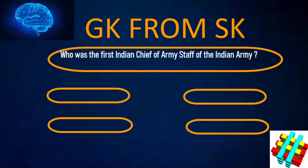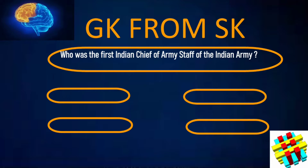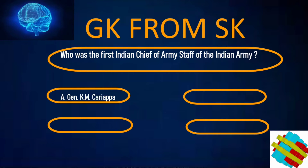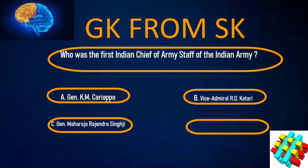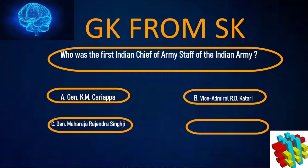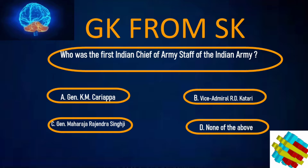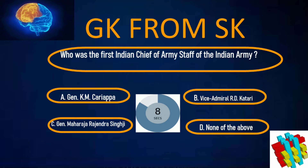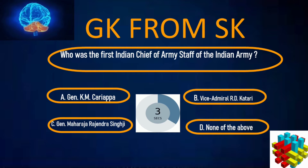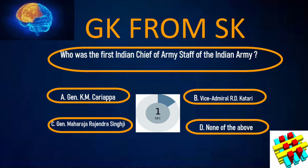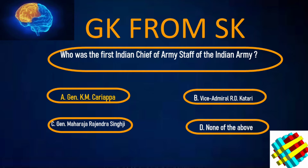Who was the first Indian Chief of Army Staff of the Indian Army? A. Gen K.M. Cariappa, B. Vice Admiral R.D. Katari, C. Gen Maharaja Rajendra Singh Ji, D. None of the above. Your time starts now. Correct answer: Gen K.M. Cariappa.